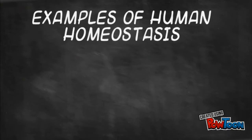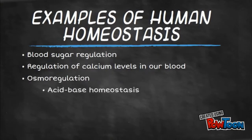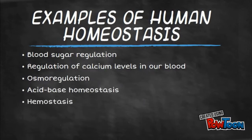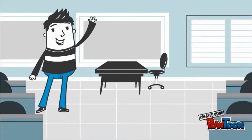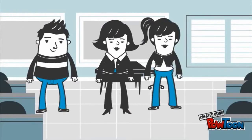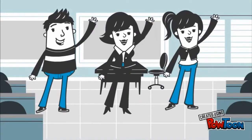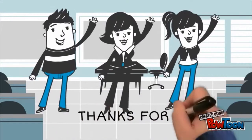We only looked at one example of how stable levels of a variable — in our case temperature — is maintained in our body. But as you can see, homeostasis occurs with many other variables, ensuring that our bodies function at their optimal condition. I hope you learned a lot from this video, and will continue to learn all about homeostasis. Thanks for watching!